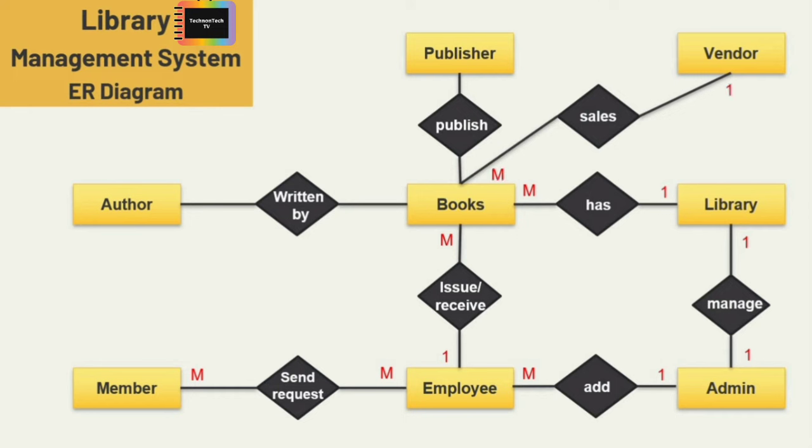Next is vendor and books: one vendor sells many books. One publisher publishes many books. And last is the book and author entity: many books are written by one author. So this is the cardinality ratio between these entities. Now let's move on to the attributes — for the entity library I am adding three attributes.